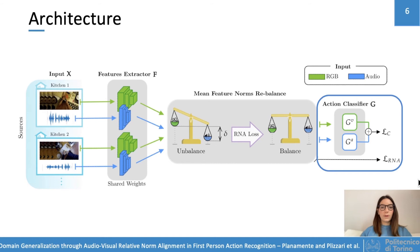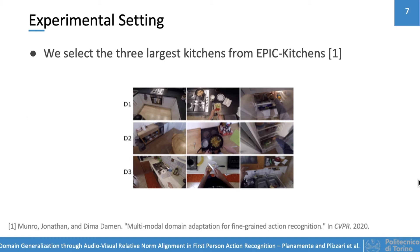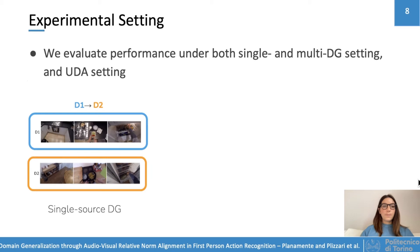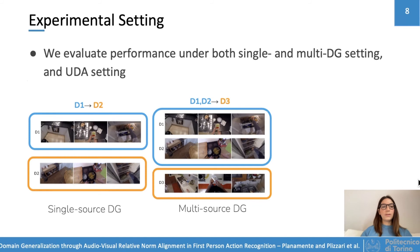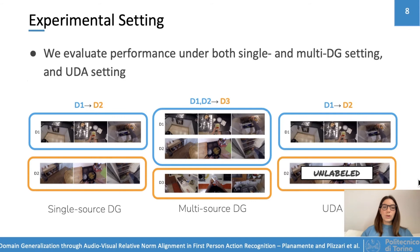We follow the experimental protocol proposed at CVPR 2020, selecting the three largest kitchens from the Epic Kitchen dataset as three different domains. We evaluate performance under different settings: the single-source domain generalization setting, consisting in training on one kitchen and testing on an unseen one; the multi-source domain generalization setting, where training is performed on multiple kitchens; and the unsupervised domain adaptation setting, where unlabeled target data are available during training.